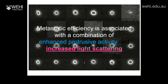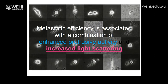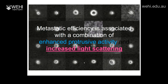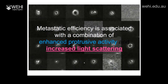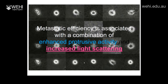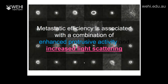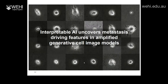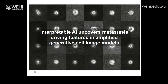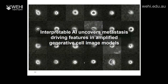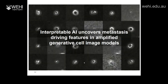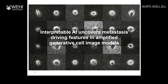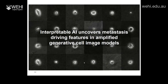We think metastatic efficiency is associated with a combination of enhanced protrusive activity and increased light scattering — though we don't yet know the reason for the increased light scattering. More generally, this project is about how to interpret these very powerful deep learning models: the idea is to take subtle phenotypes and amplify them in silico to generate images with amplified features so we can interpret them. We're now taking similar ideas to different domains and applications.